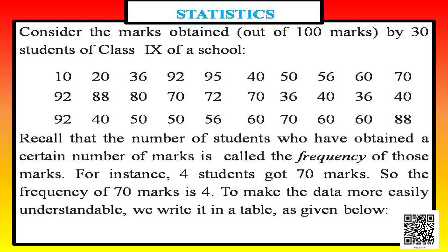Now consider example 2, which illustrates grouped data. The marks obtained out of 100 by 30 students of class 9 are given. Some numbers are repeated — for example, 92 is repeated, 88 is repeated, and 60 appears three times. In such cases, instead of simply arranging in ascending order with repetitions, we make groups, and write them in tabular form.